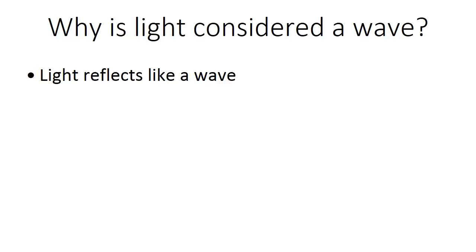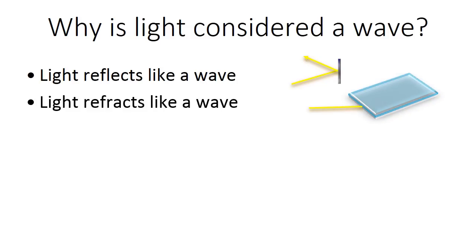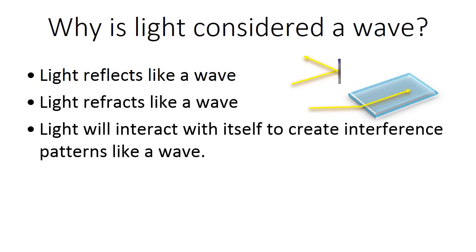Now why is light considered a wave? There's several reasons. Light reflects like a wave. We'll be talking about this in later videos. So light bounces off things. Light refracts like a wave. So when it goes through into a different medium, it will bend and change direction. And light will interact with itself to create interference patterns like a wave.